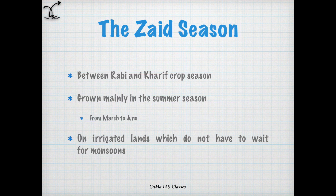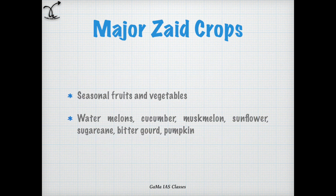A shorter season between Rabi and Kharif crop season is the Zayed season. The crops are grown mainly in summer from March to June. They are grown on irrigated lands which do not have to wait for monsoons. In this season, mainly seasonal fruits and vegetables are grown like watermelons, cucumber, muskmelon, sunflower, sugar cane, bitter gourd, and pumpkin.